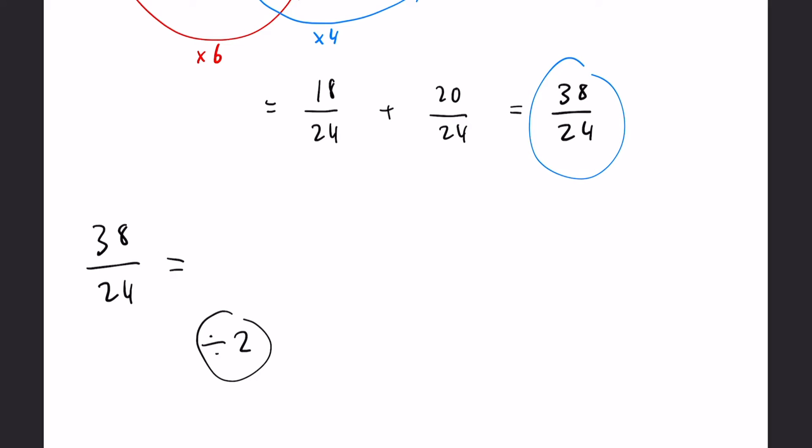38 divided by two makes 19, and 24 divided by two makes 12. And this would be your final answer.